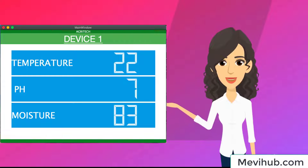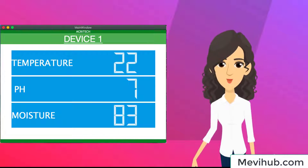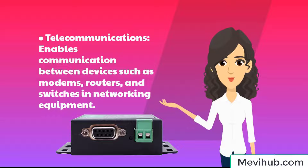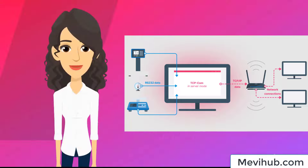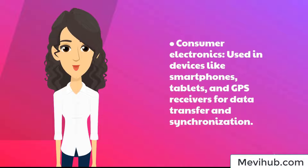Serial communication plays a crucial role in a wide range of industries, including: Industrial automation — used for controlling and monitoring machinery, sensors, and actuators in manufacturing processes. Telecommunications — enables communication between devices such as modems, routers, and switches in networking equipment. Automotive — used for diagnostics, firmware updates, and communication between vehicle components. IoT (Internet of Things) — facilitates communication between IoT devices, allowing them to exchange data and commands. Consumer electronics — used in devices like smartphones, tablets, and GPS receivers for data transfer and synchronization.